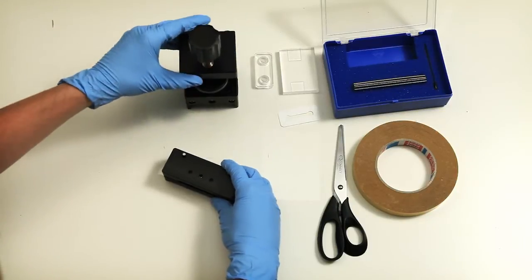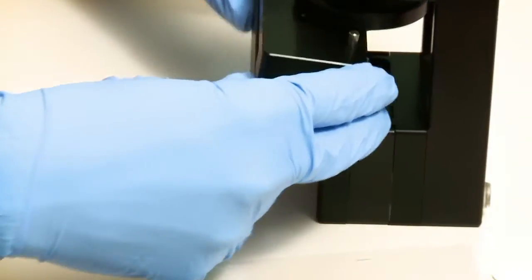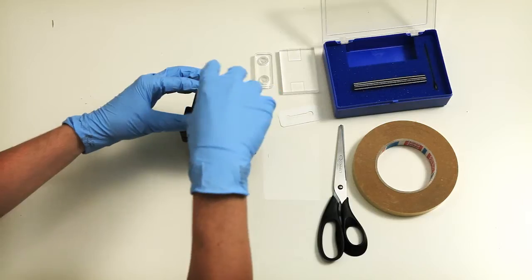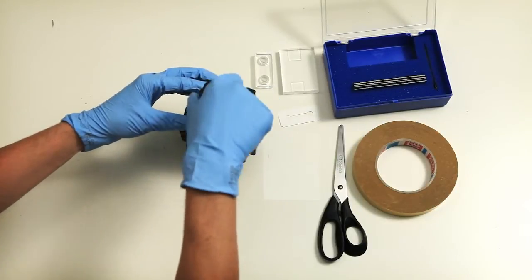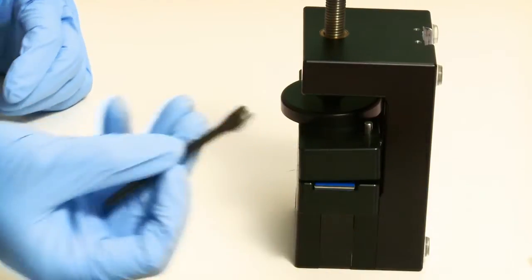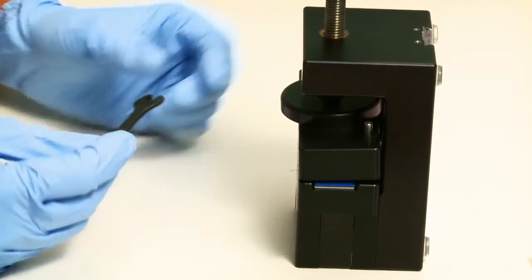Now you can use the measuring cell as a vise to punch in the holes. The normal pressure you apply for a measurement is not enough. Use this small wrench to tighten the knob.